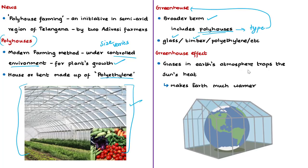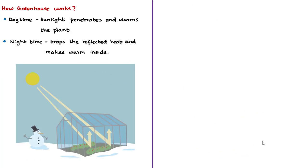Before seeing how the polyhouse works, you should know the concept of the greenhouse effect. The greenhouse effect is a process where gases in Earth's atmosphere such as carbon dioxide trap the sun's heat, making Earth warmer than it would be without an atmosphere. The same principle applies in greenhouse or polyhouse farming. Semi-circular shaped structures made of transparent materials like glass or polyethylene are used — the semi-circular shape allows maximum light penetration and coverage.